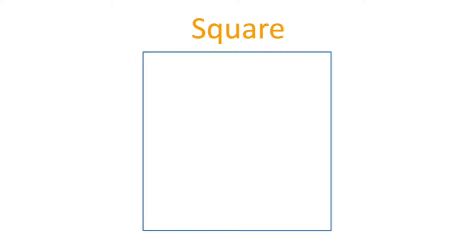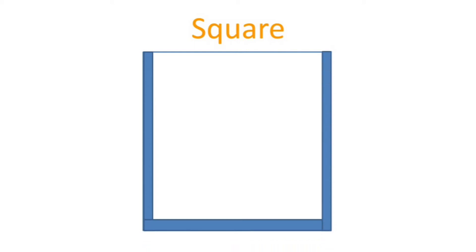This is a square. A square has four equal sides. All of the sides of the square are the same length. Let's count the sides of the square: one, two, three, four.